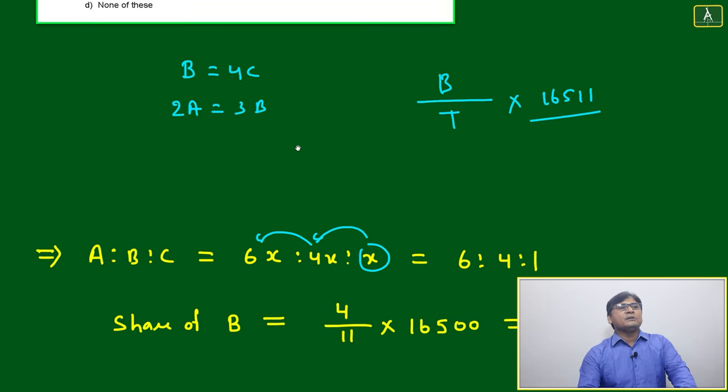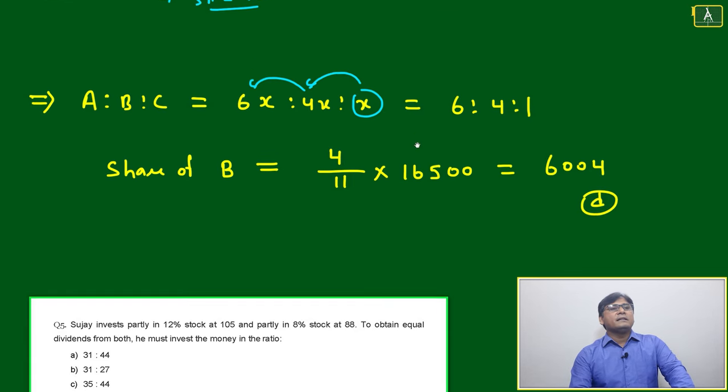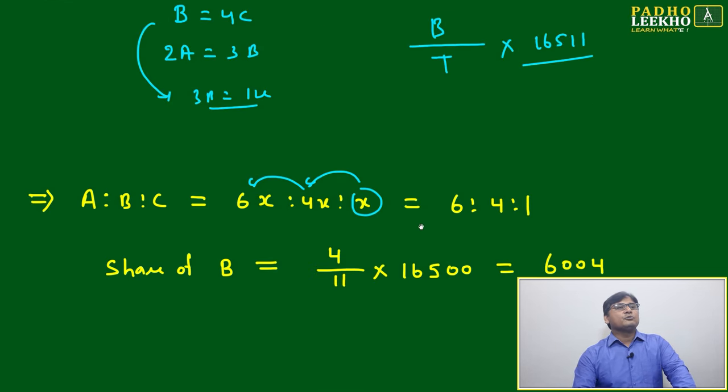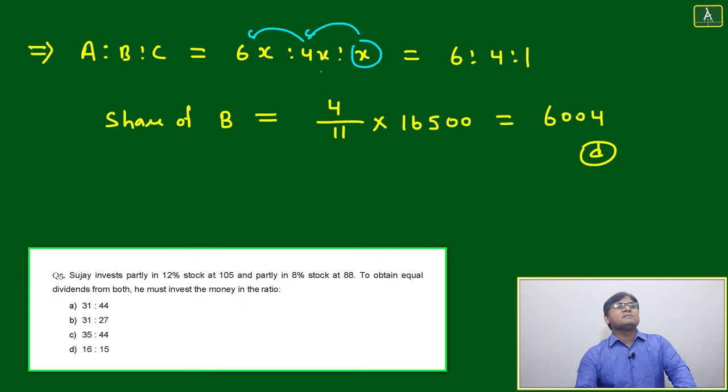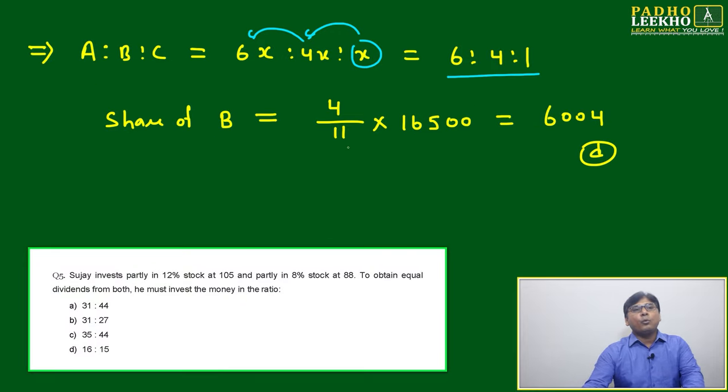Since 2A = 3B, multiply to get 6A. Here 2A = 3B, then multiply: 3B = 12C. Accordingly, taking it in reverse, it will become 6x, 4x, and x, which gives us the ratio 6:4:1.